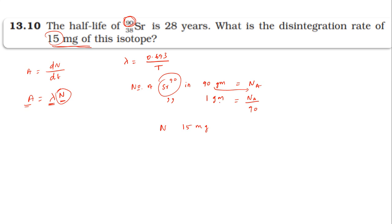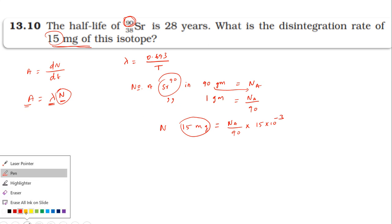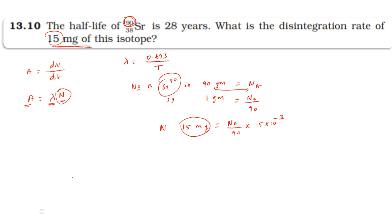For 15 milligrams, N equals Avogadro's number divided by 90, multiplied by 15 milligrams — converting milligrams: 15 into 10 to the power minus 3. Now we substitute the lambda value and the number N.